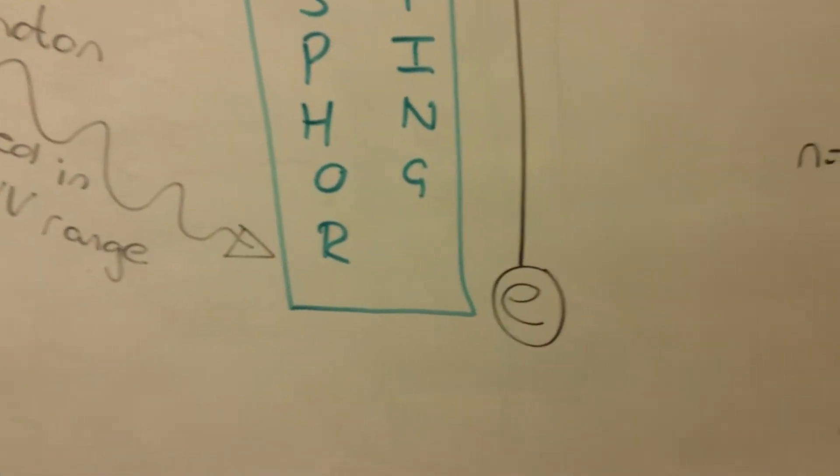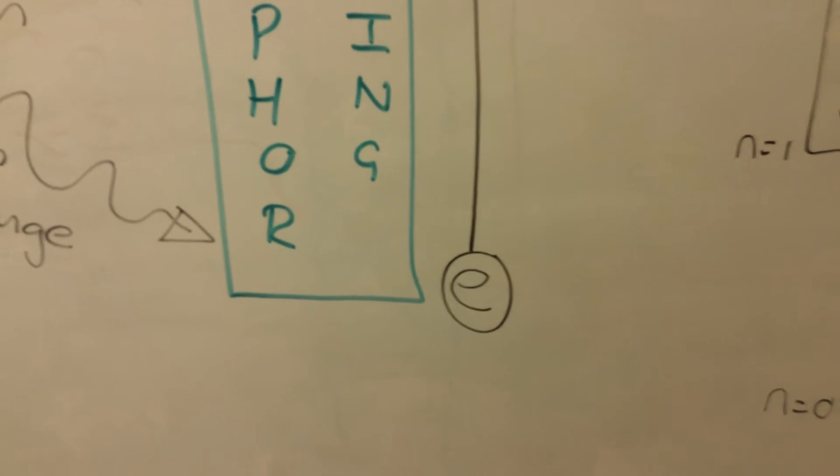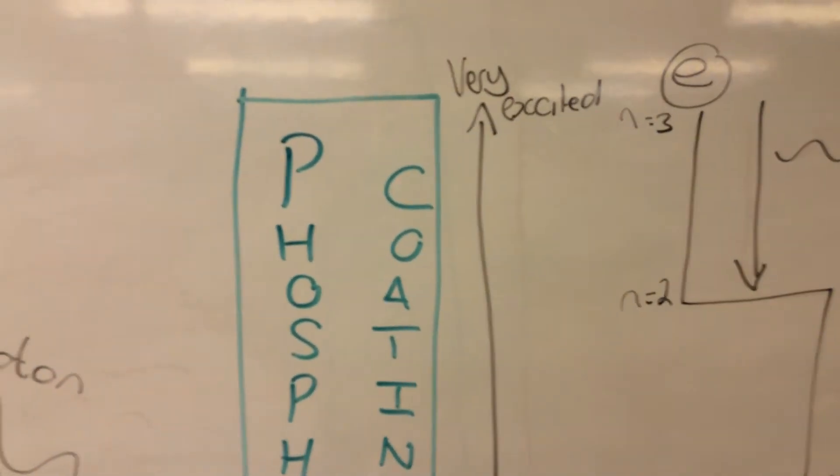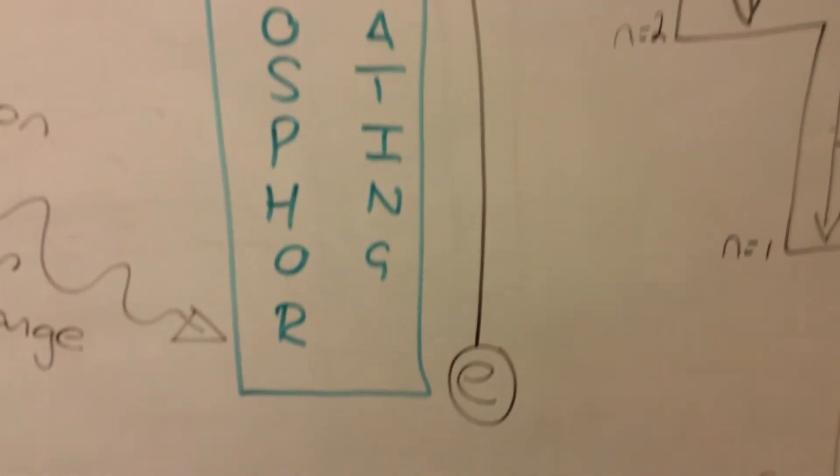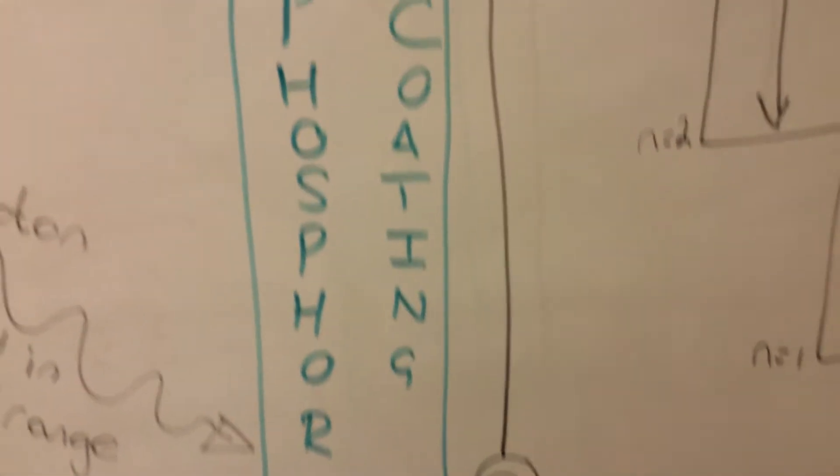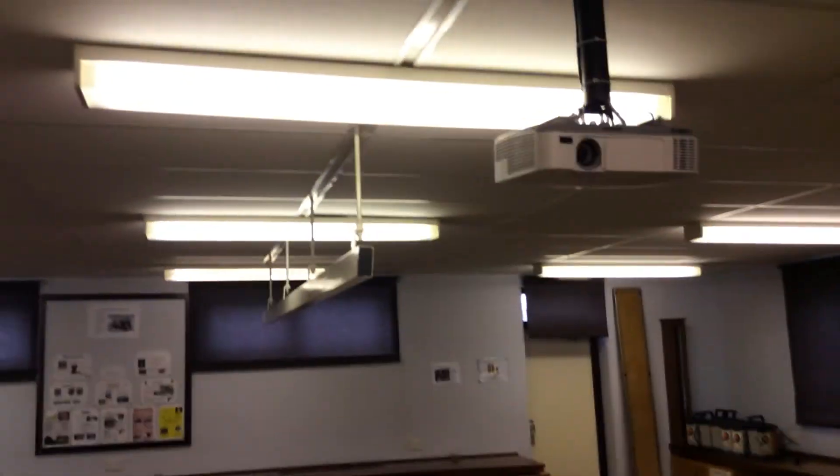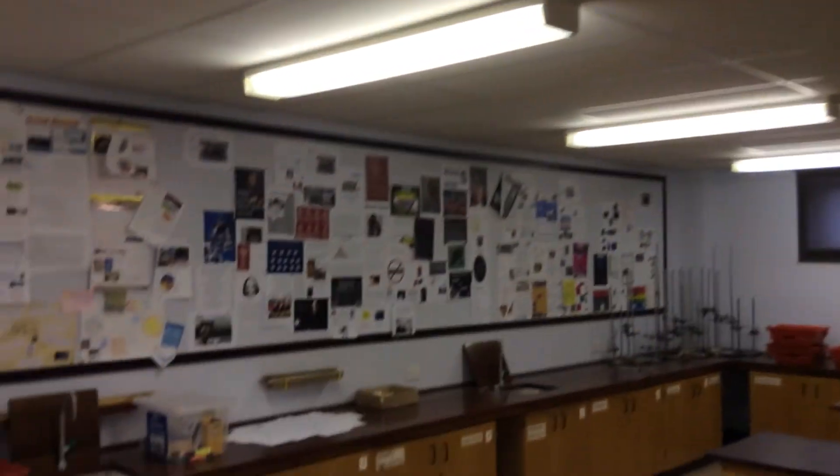Now, what happens then, is that an electron in the phosphor coating becomes very, very excited. So far, we've not actually got any light being emitted by our fluorescent tube.